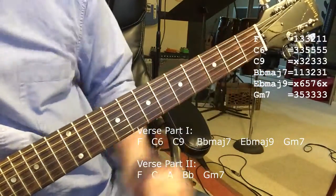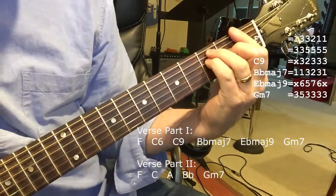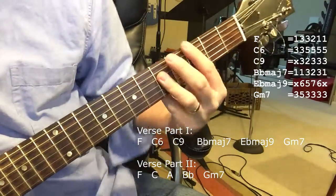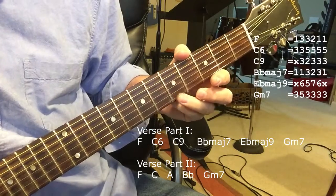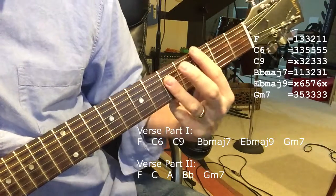The first loop is going to be an F, a C6, which is kind of like you're barring a C chord here, but you're pressing down on this string, so you're getting all four of those strings. That's a C6.